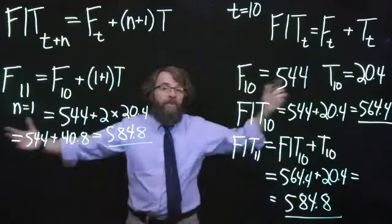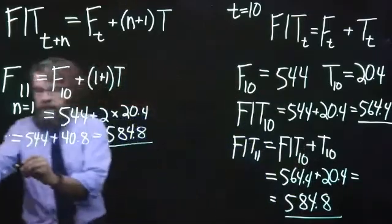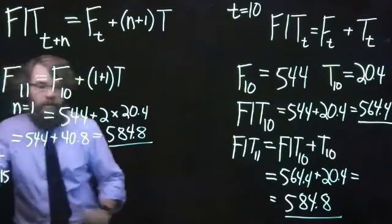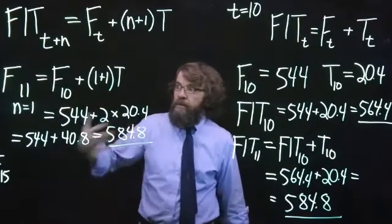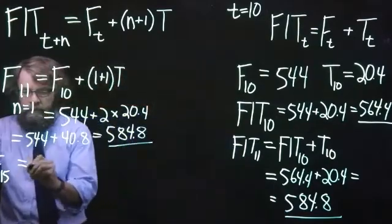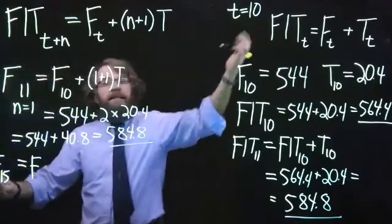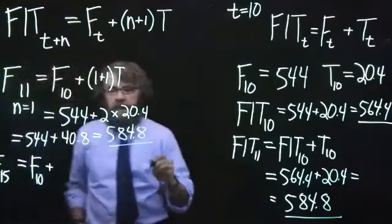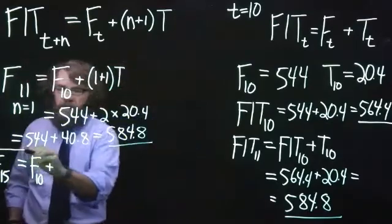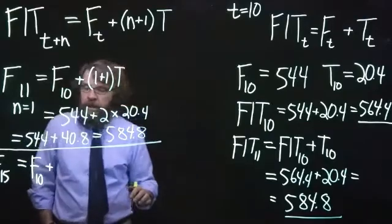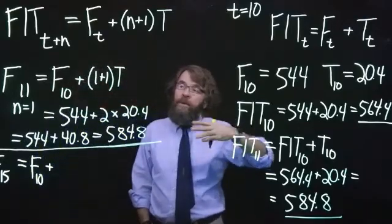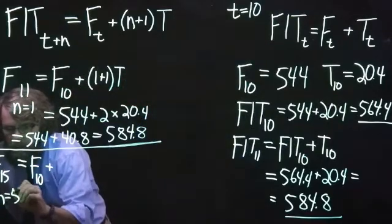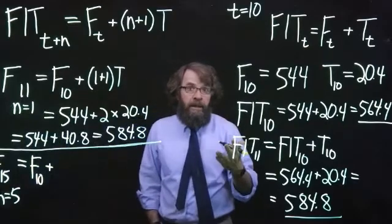Let's say we want to go farther into the future. Let's say we want to know the forecast for period 15. If we're talking about period 15, remember t is 10. So we're going to have the level of 10 plus - let me draw a line here to separate these. We're talking about going five periods further into the future, so n equals five.